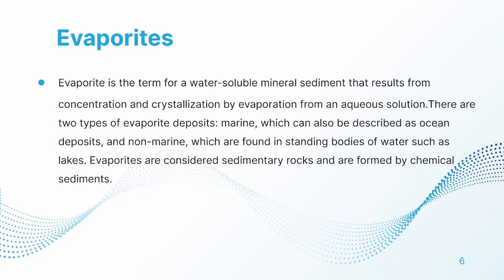The next examples of non-clastic sedimentary rock are evaporitic rocks. Evaporite is the term for a water-soluble mineral sediment that results from concentration and crystallization by evaporation from an aqueous solution. There are two types of evaporite deposits: marine, which can also be described as ocean deposits, and non-marine, which are found in standing bodies of water such as lakes.